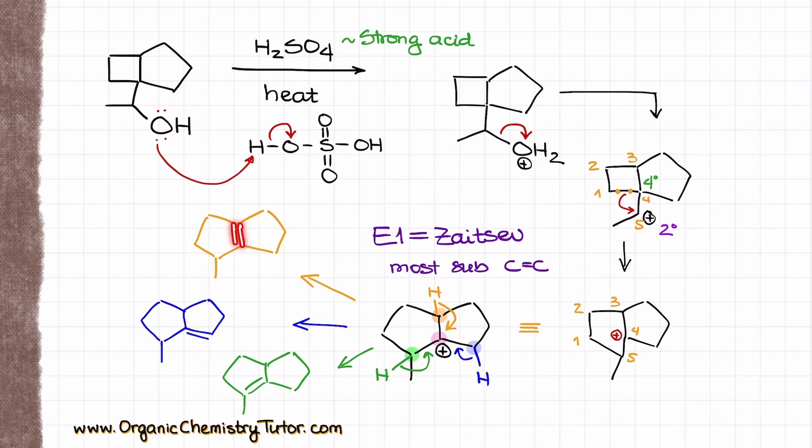So the orange double bond is connected to one two three four other carbons. The green double bond over here that one is connected to one two three four carbons as well while the blue one that I have over here well that one is only connected to one two three carbons. Which means that when it comes to our major product we can declare that both green product and the orange product are going to be our major products and the blue one we would expect as the minor product.